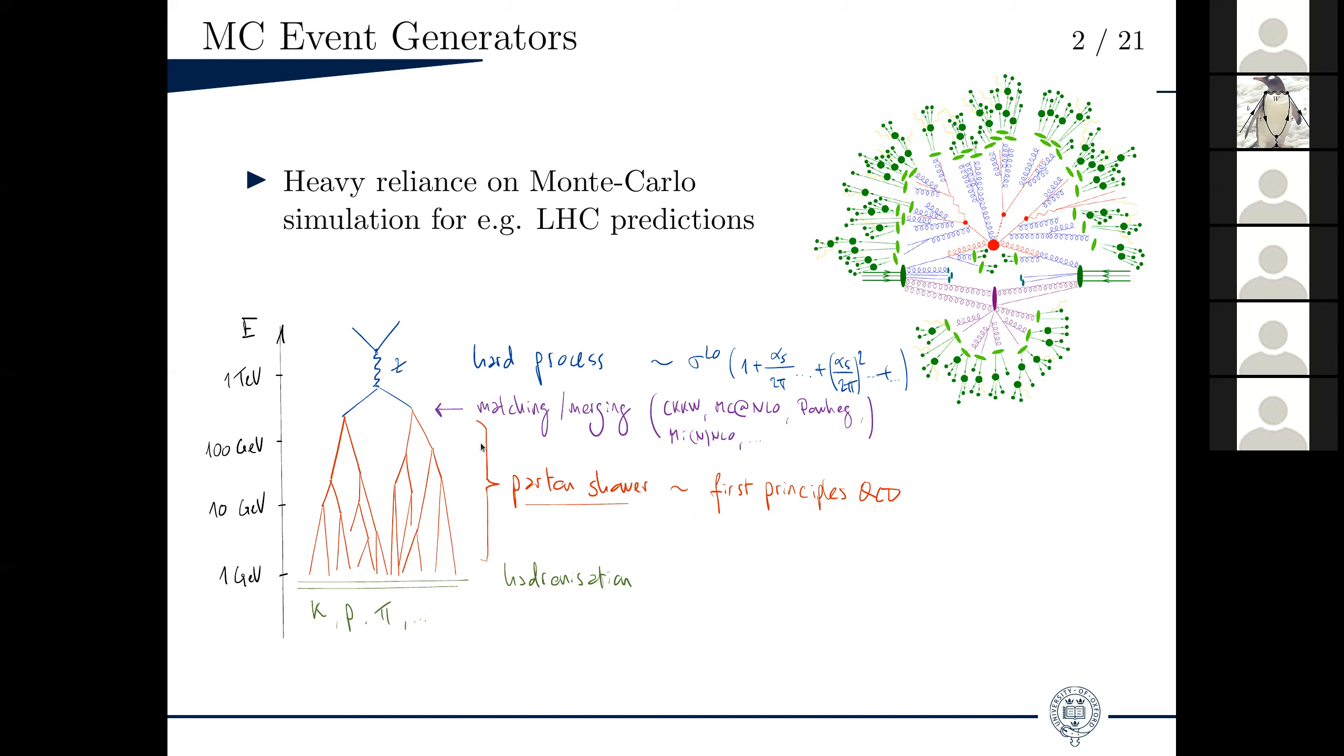What these Parton showers do is effectively, they resum large logarithms coming from QCD divergences, up to a certain order, which is the so-called logarithmic order. At the very end, once the shower cutoff has been reached, the partons that were produced hadronize, and they combine into the actual particles that enter your detector. So kaons, protons, pions, etc.